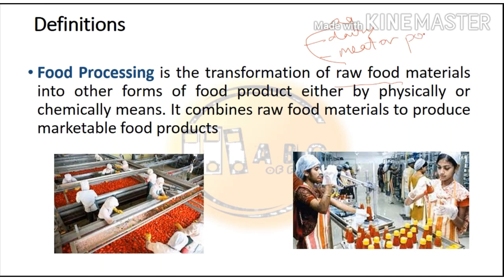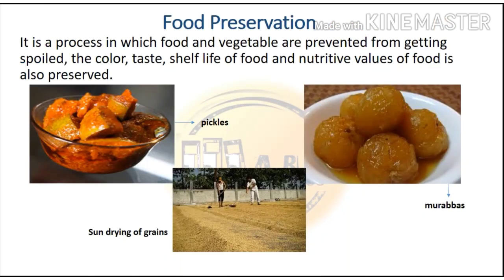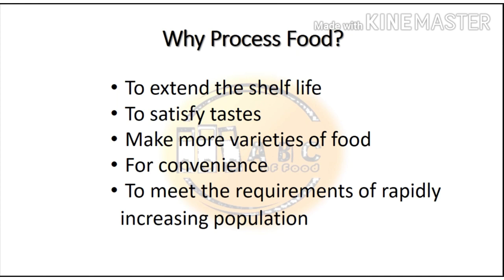Food processing also includes the process of value addition to the final products. The second definition is food preservation — it is a process in which food and vegetables are prevented from getting spoiled. The color, taste, shelf-life, and nutritive values of food are also preserved. Examples of traditional forms of food preservation include pickles, murabbas, and sun drying of grains.